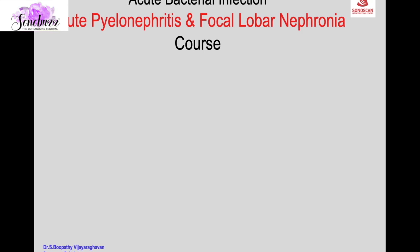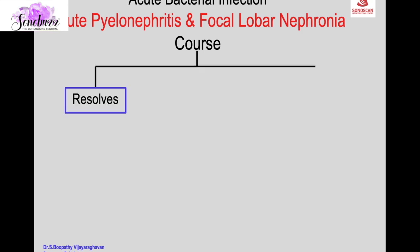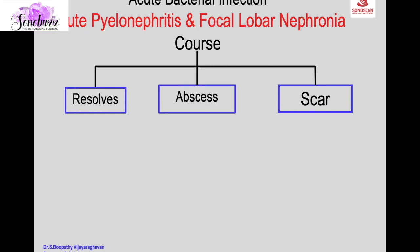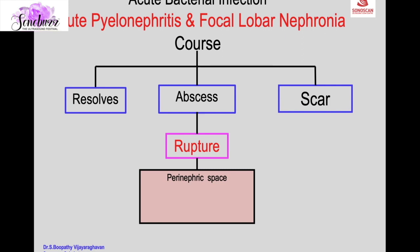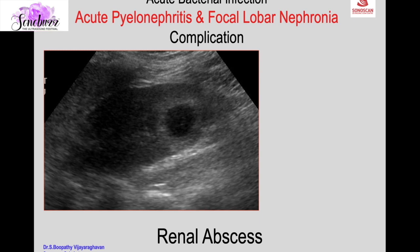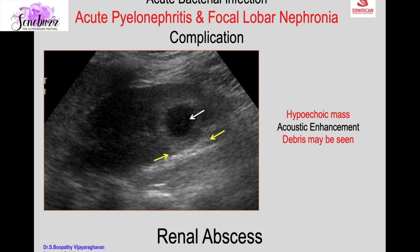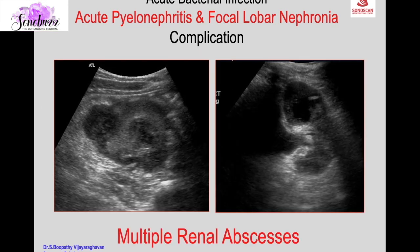Most cases of acute pyelonephritis and focal lobar nephronia resolve with treatment. Some cases, due to destruction of parenchyma, result in a scar, or can progress to an abscess. Renal abscess can rupture into the perinephric space, collecting system, or both. On ultrasound, a renal abscess appears as a hyperechoic mass in the renal parenchyma with acoustic enhancement indicating fluid/pus, debris as internal echoes, and no color Doppler flow within the mass.